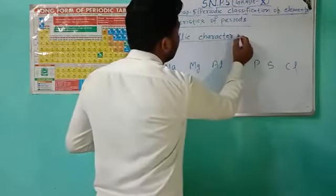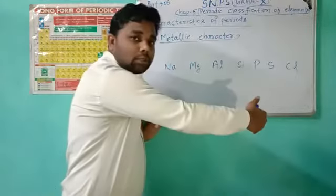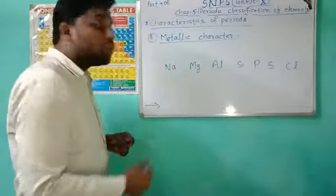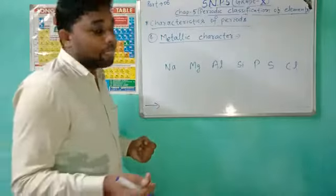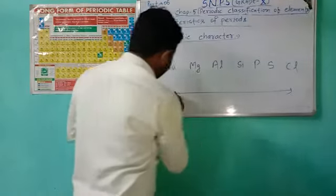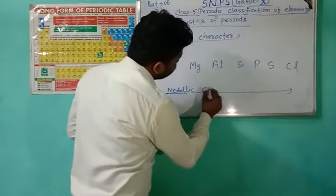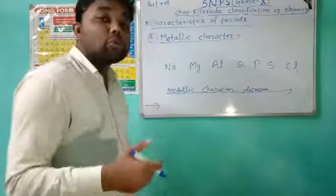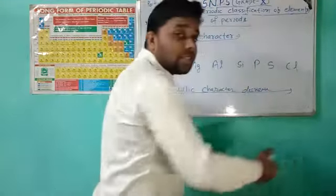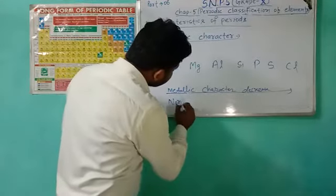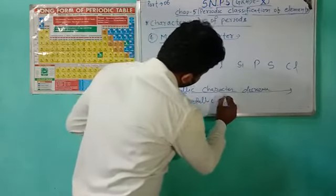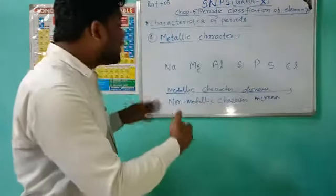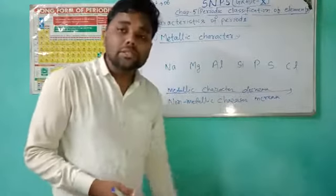When we go left to right in the periodic table — this is left and this is right — the metallic character decreases. And its vice versa is also true: when metallic character decreases, the non-metallic character increases.